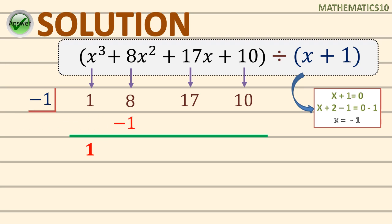Take note: the first product you get must always be aligned to the second numerical coefficient. So since we have 8 and negative 1, we combine them and get positive 7. After that, just repeat the process by multiplying by the value of x, which is negative 1. So 7 times negative 1 gives negative 7. Then combine again: 17 plus negative 7 gives positive 10.